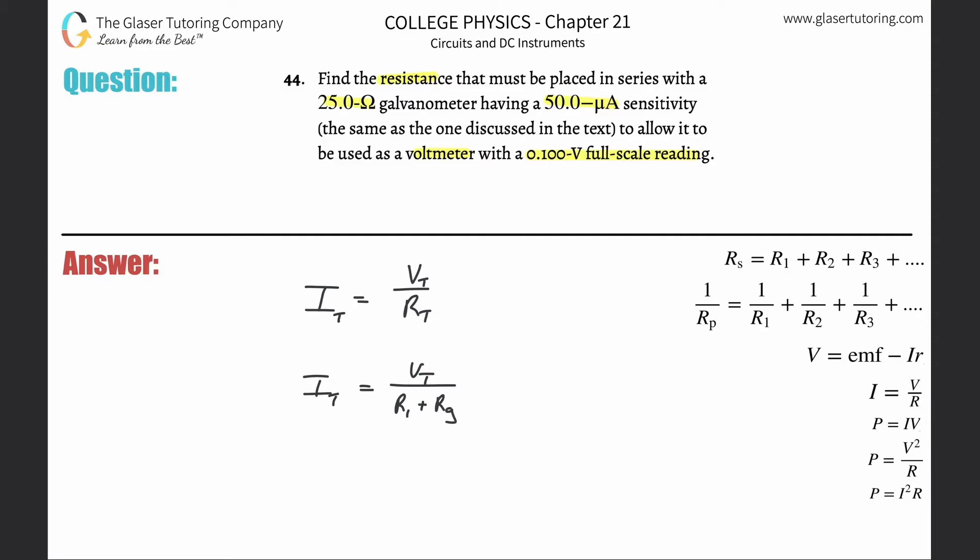Now we have everything we need, right? The current, the voltage here - they gave us the full scale reading is going to be 0.1. Alright, the R1 is what we're solving for, and then the resistance of the galvanometer was given, or 25, right?